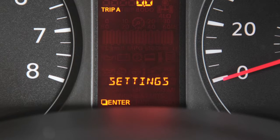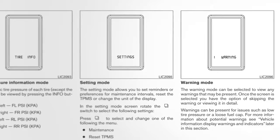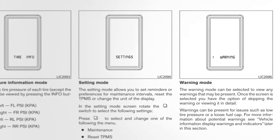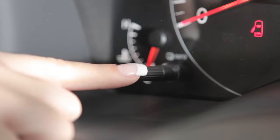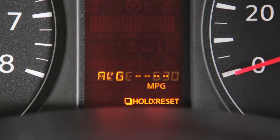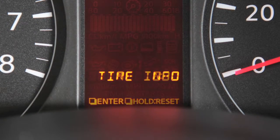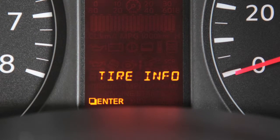Setting mode allows you to set reminders, preferences for maintenance intervals, reset the TPMS after rotating the tires, or to change the unit of the display, and warnings with alerts such as for low tire pressure or loose fuel cap. Press the info button and hold it for one second to reset the selected item.